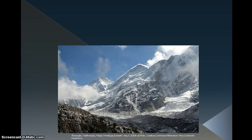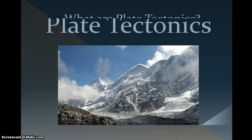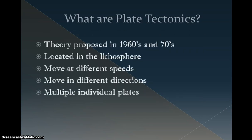Hello, today we are going to talk about one of the fundamental parts of how our planet functions: plate tectonics. It's the scientific theory composed in the 1960s and 70s describing the constant movement of the Earth's lithosphere. The lithosphere is the top layer of Earth's surface containing the crust and uppermost part of the mantle. The theory states that the lithosphere is composed of multiple tectonic plates, each moving at a different speed and in different directions, therefore ever changing the surface of planet Earth.